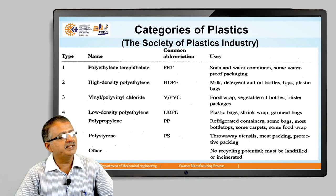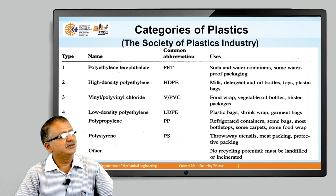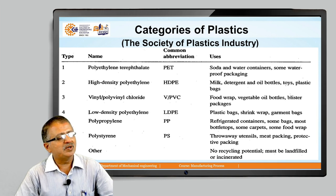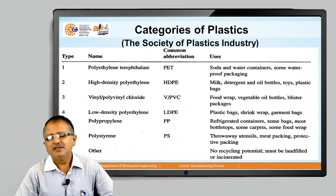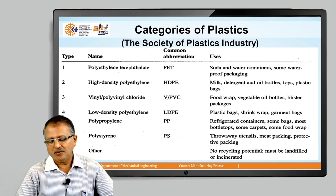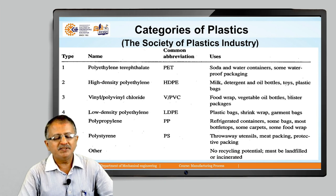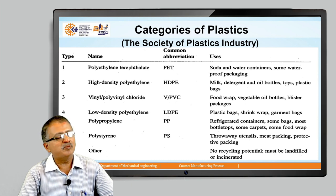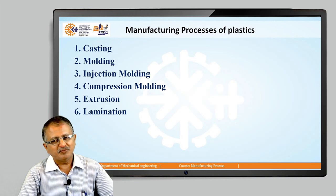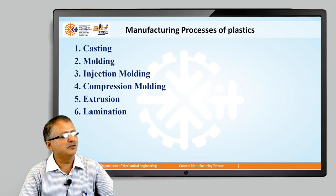HDPE — high density polyethylene — is used for milk, detergent and oil bottles, toys, and plastic bags. Low density polyethylene (LDPE) is used for plastic bags and garment bags. Polystyrene (PS) is used for throwaway utensils, meat packing, and protective packing. These identification codes — HDPE, PVC, LDPE, polypropylene, polystyrene — are numbered 1 to 7, with abbreviations and application ranges given. The categories of plastics and their common abbreviations serve the purpose of identifying the types of plastics you can deploy to satisfy production requirements.